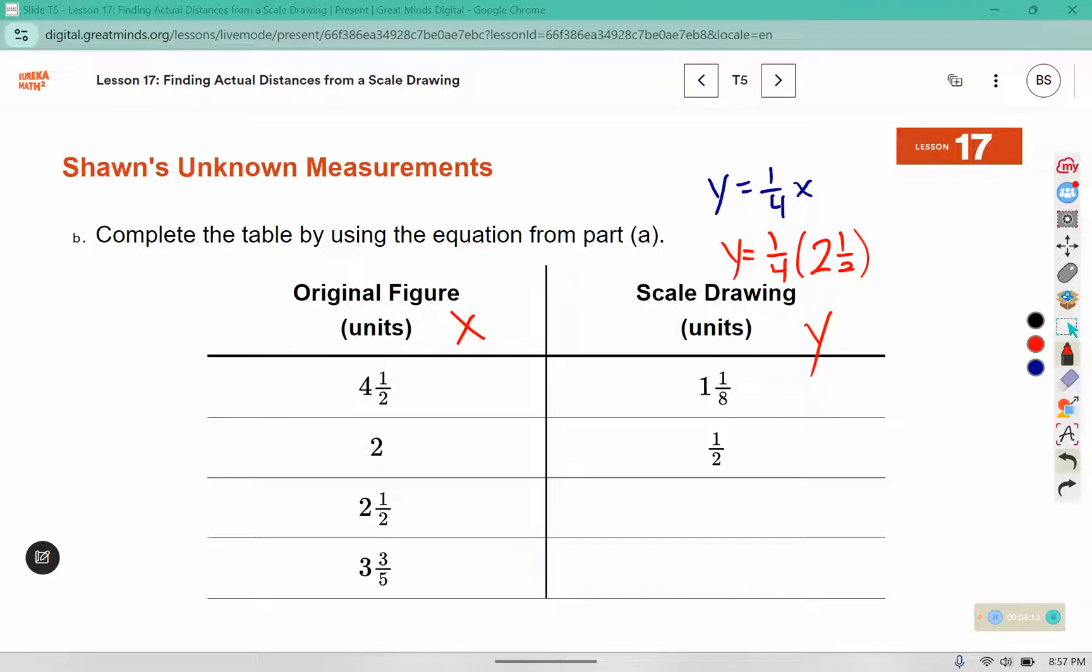We could rewrite 2 and a half. 2 times 2 is 4 plus 1 more is 5. 1 times 5 is 5 and 4 times 2 is 8.